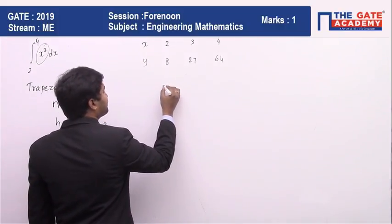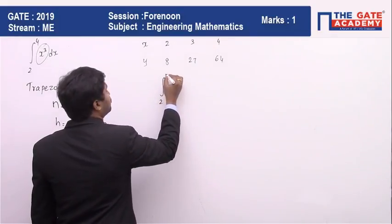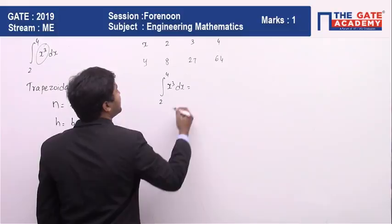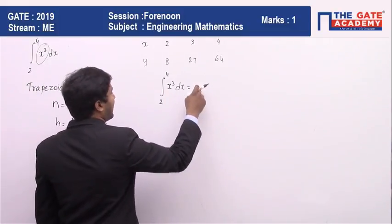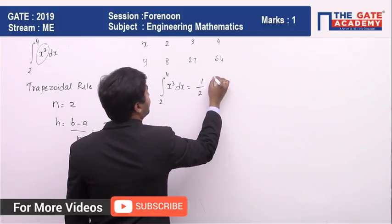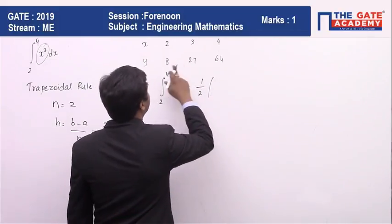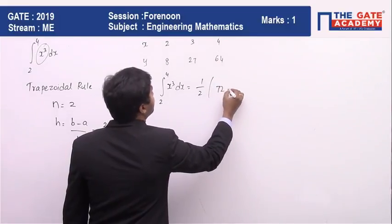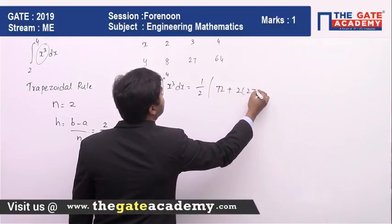Trapezoidal rule says the integration from 2 to 4 x cube dx equals h by 2. What is h by 2? h is 1, so 1 by 2, y naught plus yn. So 8 plus 64 which is 72, plus 2 times 27.